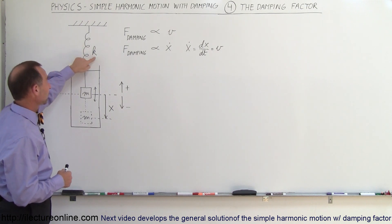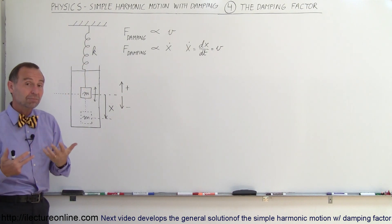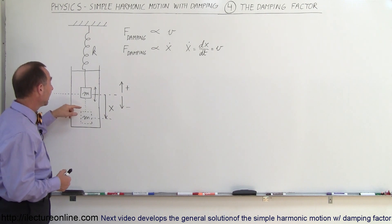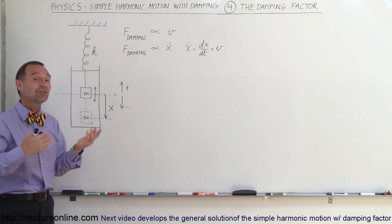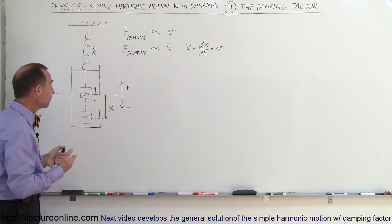Here we still have the same spring with spring constant k, the same mass with mass m in kilograms, but now the object is oscillating back and forward inside a tank that has some sort of viscous fluid as a good example for a damping factor.